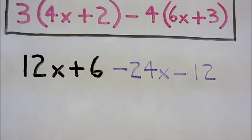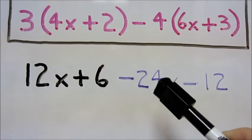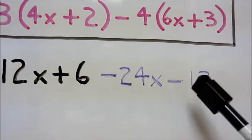In the second part of the problem, we take negative 4 multiplied by 6x to get negative 24x, and then take negative 4 multiplied by 3 to get negative 12.